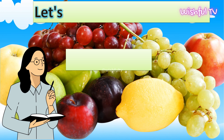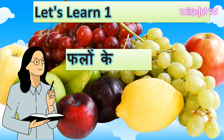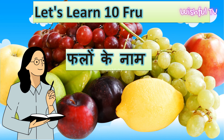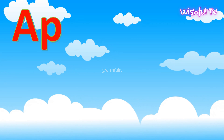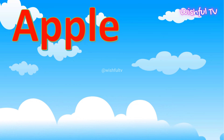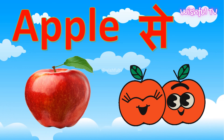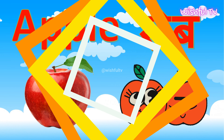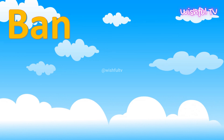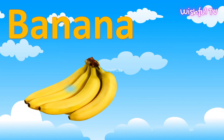Hello kids, today we are going to learn fruit names in English and in Hindi. A-P-P-L-E, apple. Apple means seb. B-A-N-A-N-A, banana. Banana means kela.